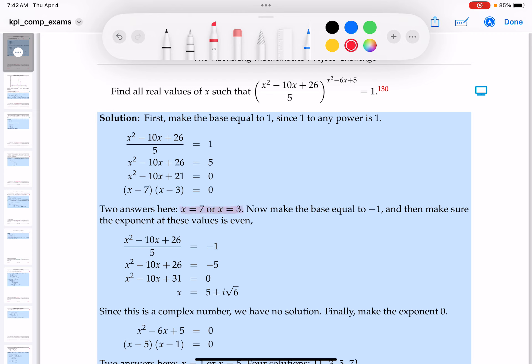The next part is to make the base equal to minus 1. Now you may wonder why that is, because minus 1 to even powers would be equal to 1. So I'll make the base minus 1 now. x² - 10x + 26 over 5 equals minus 1. Well, this looks pretty easy to solve too.